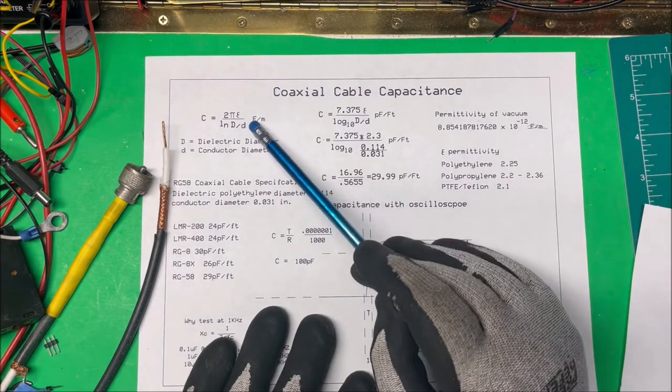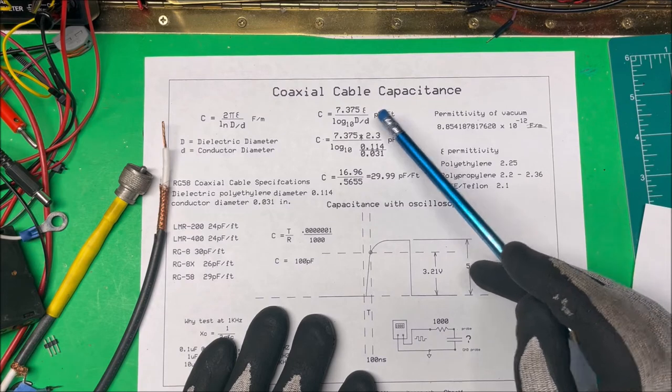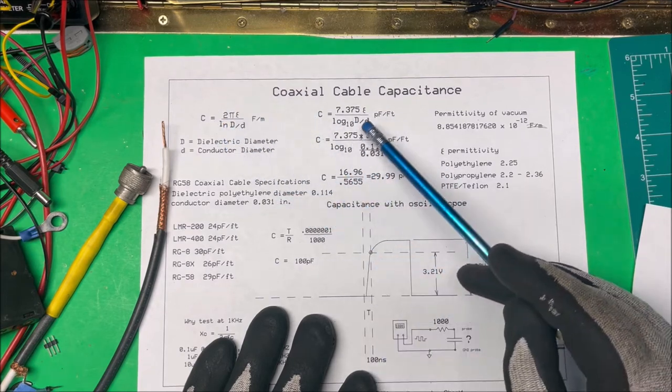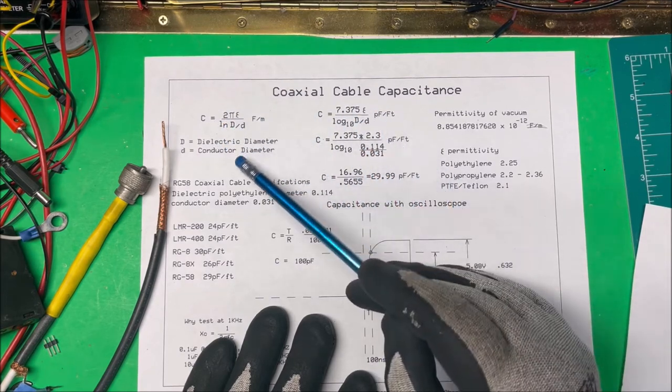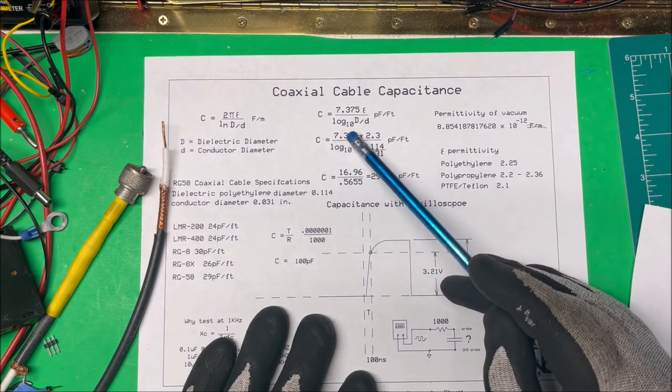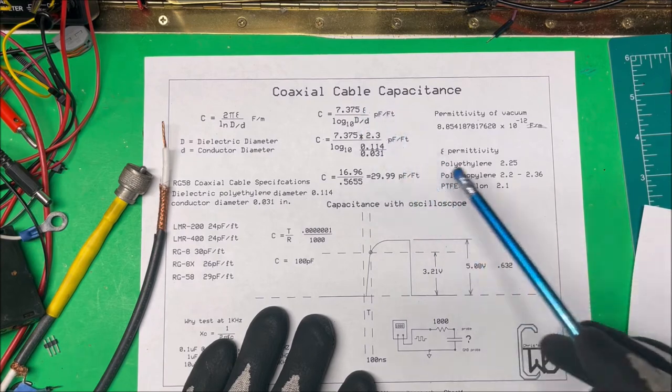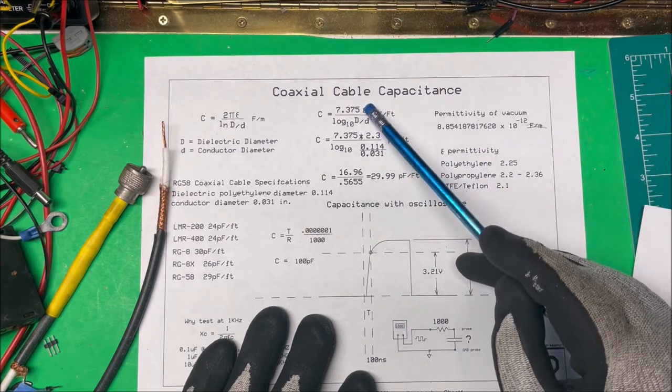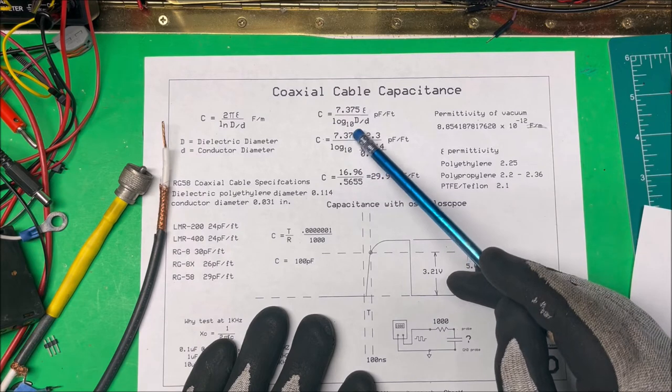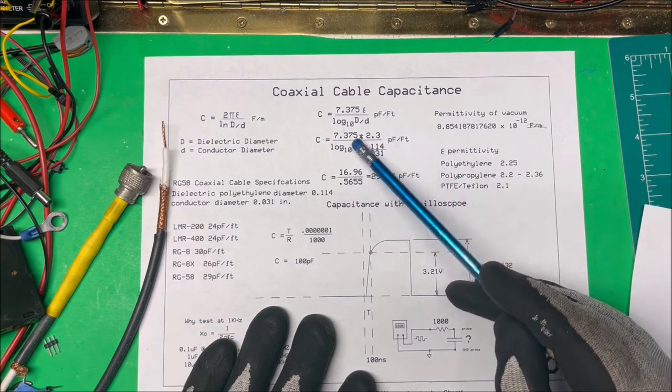Now this is in farads per meter. I wanted it in picofarads per foot, so I massaged this formula around a little bit, and I came up with this here. And I didn't use a natural log, I wanted to use log 10. And I took this permittivity into account in this number up here. So if I multiply this all out...